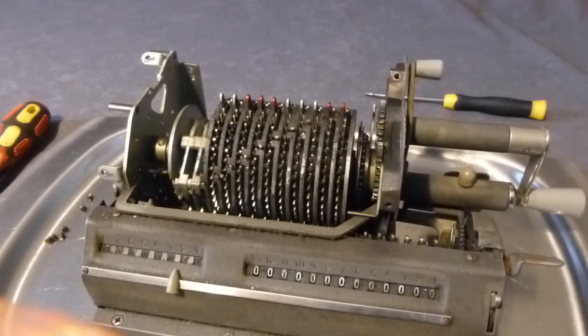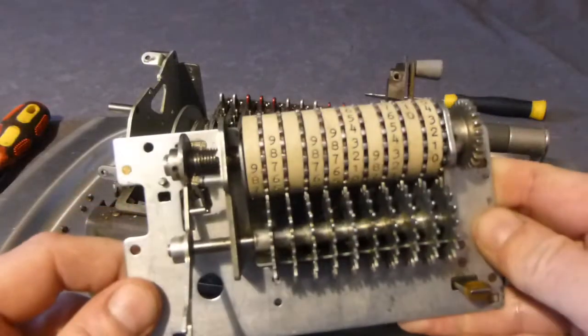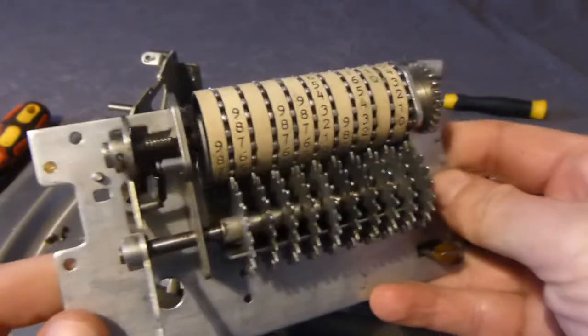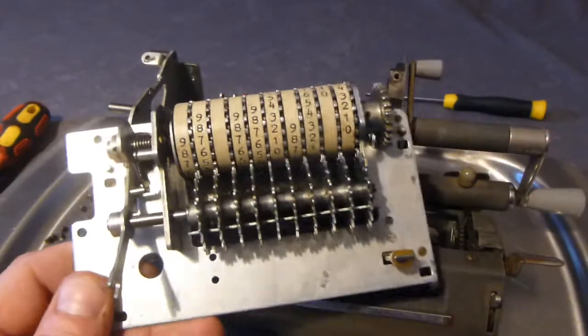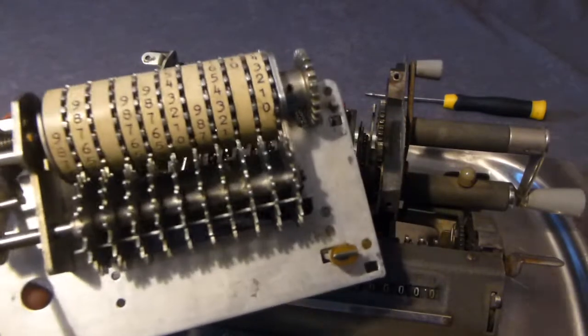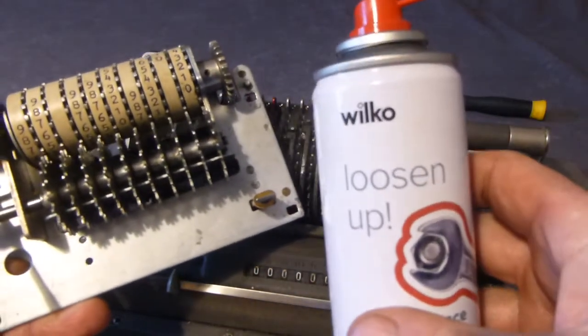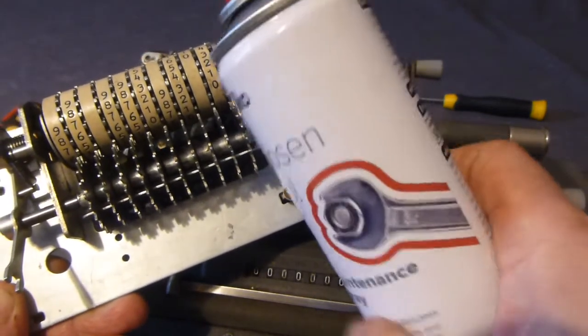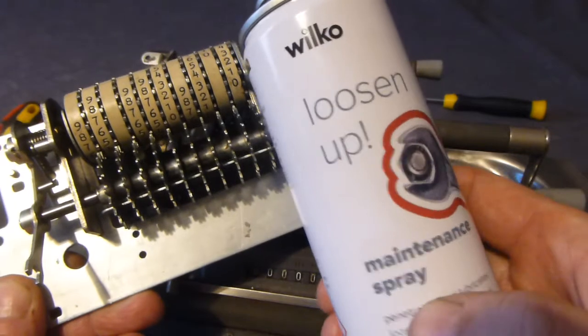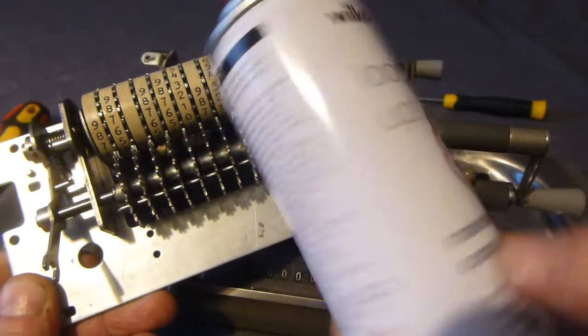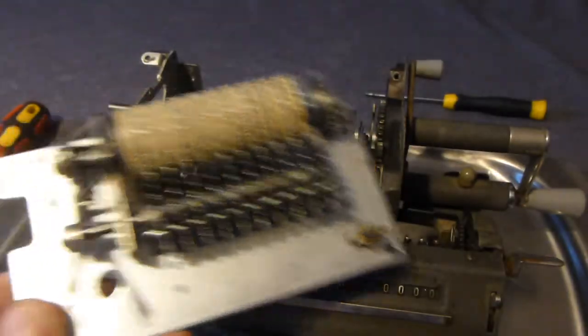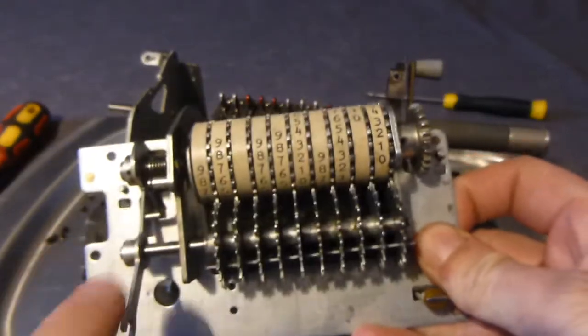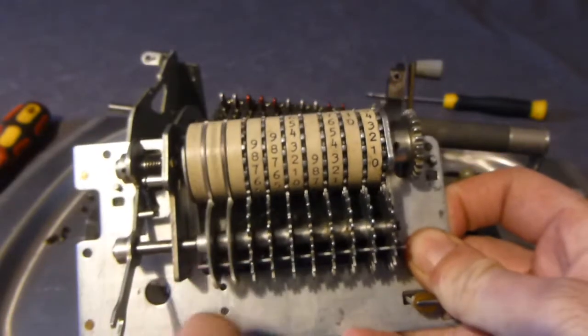Okay, so I've given the control register a little bit of a clean and lubrication. The stuff I use is this Wilco loosen up maintenance spray. I think it's pretty much WD-40 by another name, but it seems to do the trick.